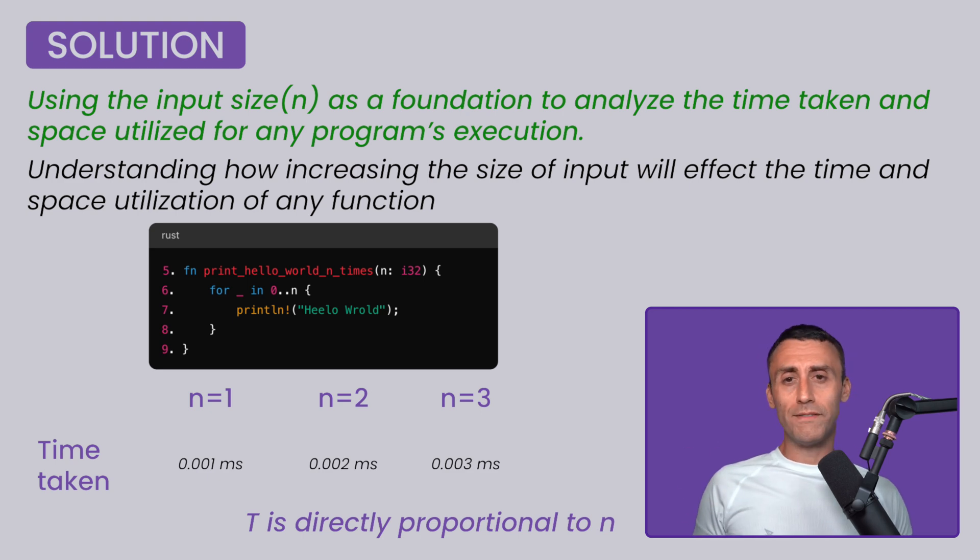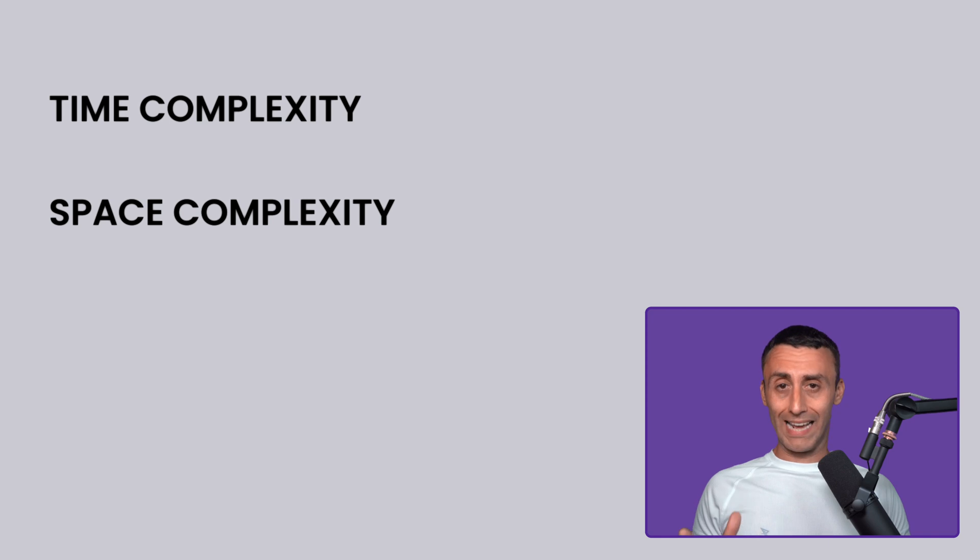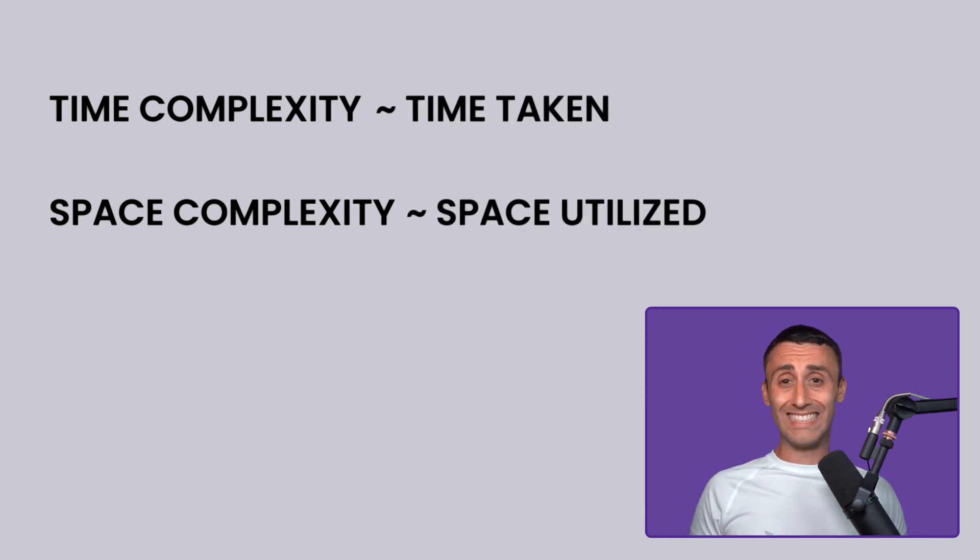This example gives you an idea. It's a very simple program. But what will happen if we write complex programs like binary search? How would we calculate their time and space complexity? Also, this is just a reminder not to get intimidated by the term complexity. It's just a technical term given by the researchers. You can read it as the time taken or space utilized.